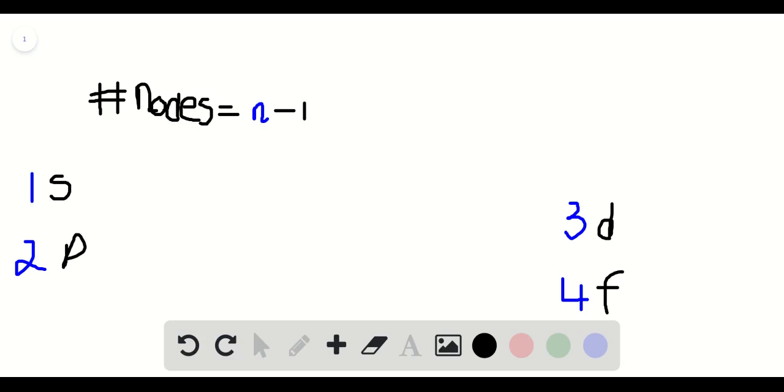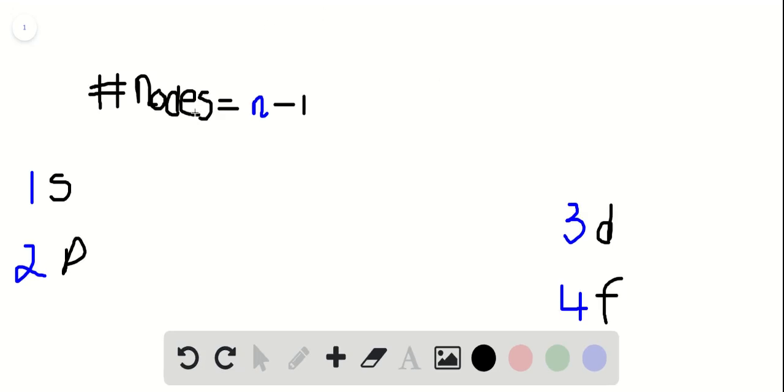This question asks us to calculate the number of nodes in the following orbitals. We're going to use this equation: number of nodes equals n minus one. A node is a space where there is 0% chance of finding electrons.